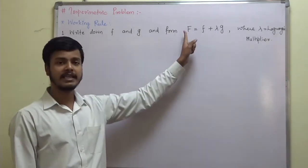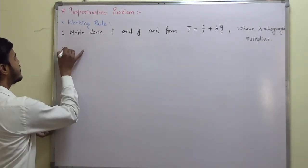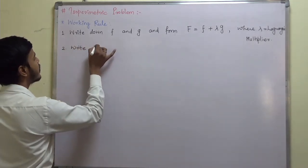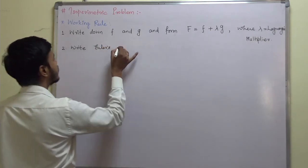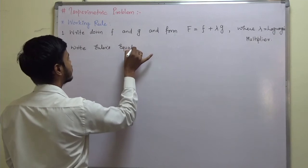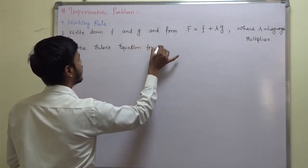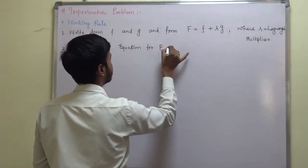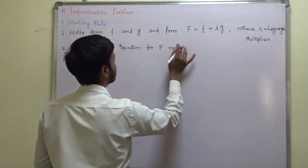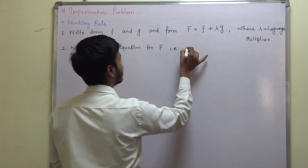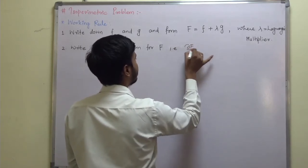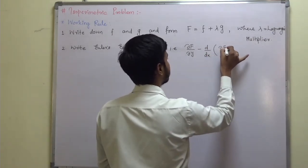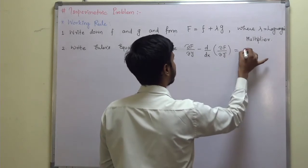The second step is to write Euler's equation for capital F. Euler's equation for F is: del F by del y minus d/dx of (del F by del y-dash) equals zero.